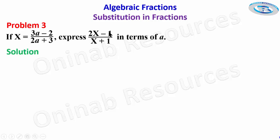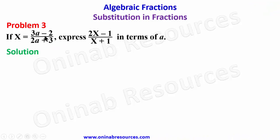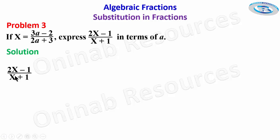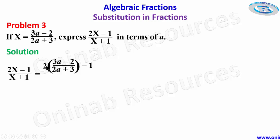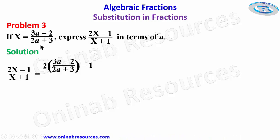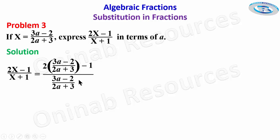In our solution, wherever we see x, since x is 3a minus 2 over 2a plus 3, we put in the whole of this expression. So at the numerator we have 2x minus 1, where our x is this fraction. We bring in the fraction, then minus 1 — that's 2x minus 1, because x is equal to 3a minus 2 over 2a plus 3. Then over x plus 1, so this fraction plus 1.